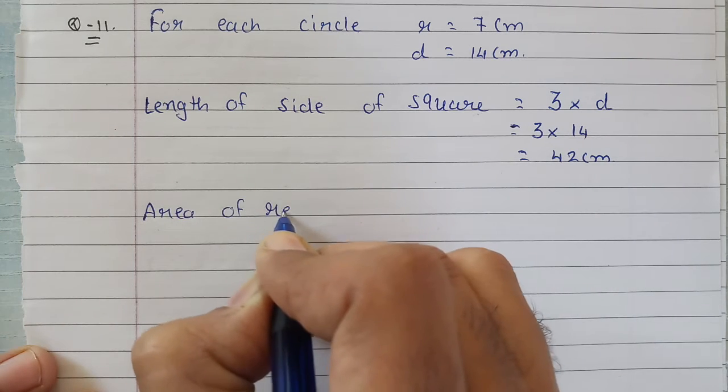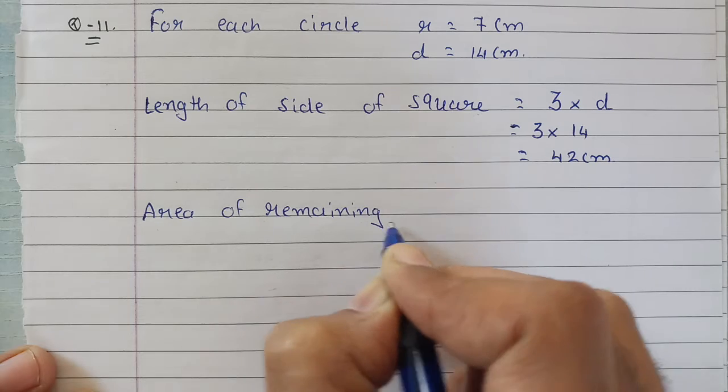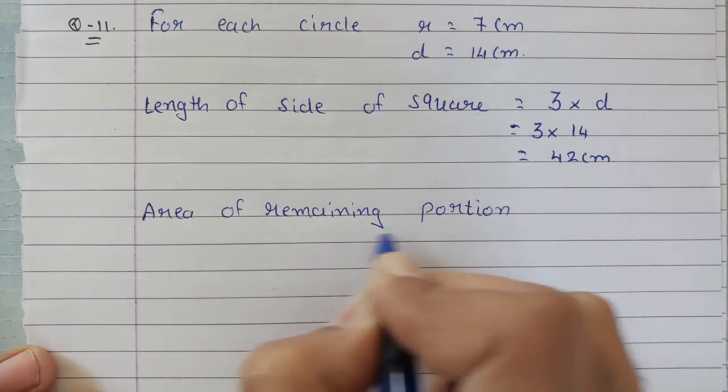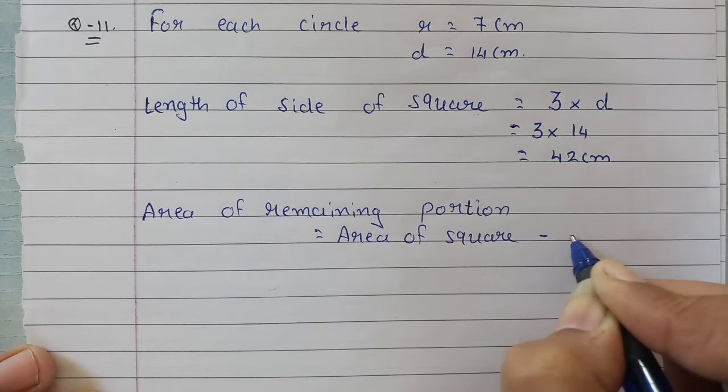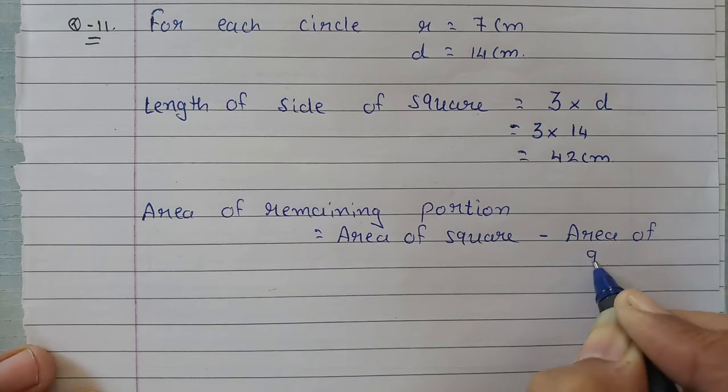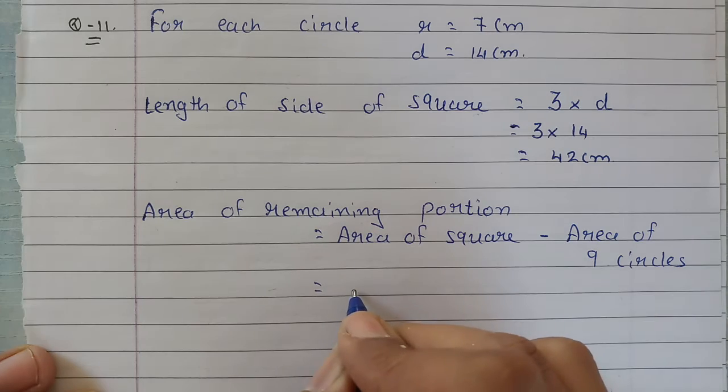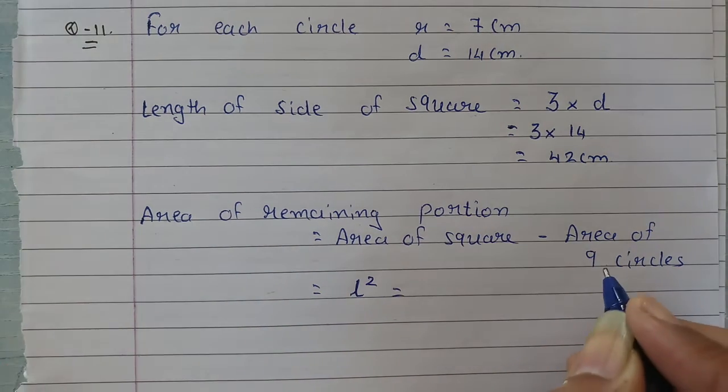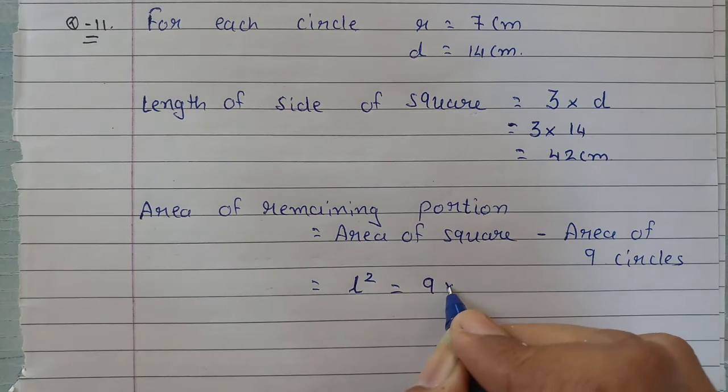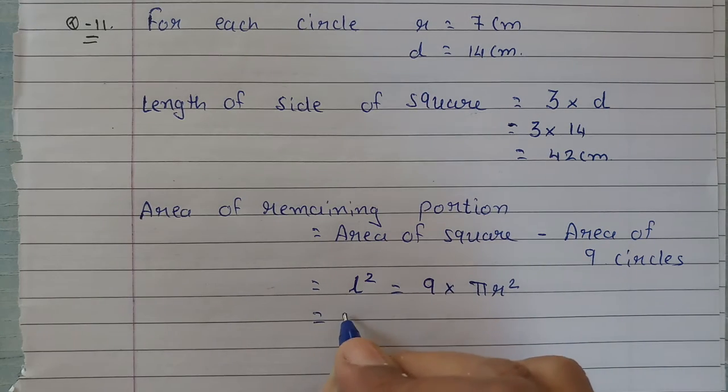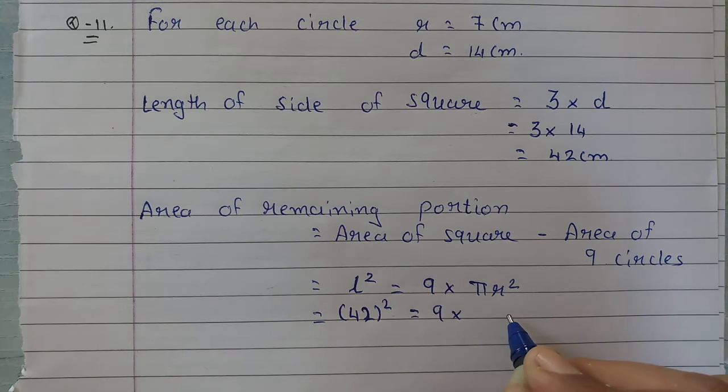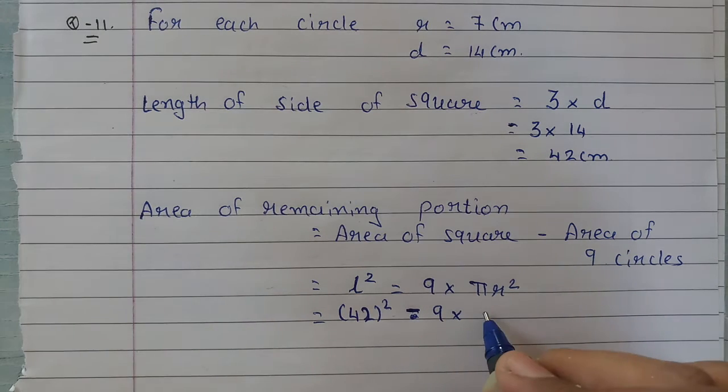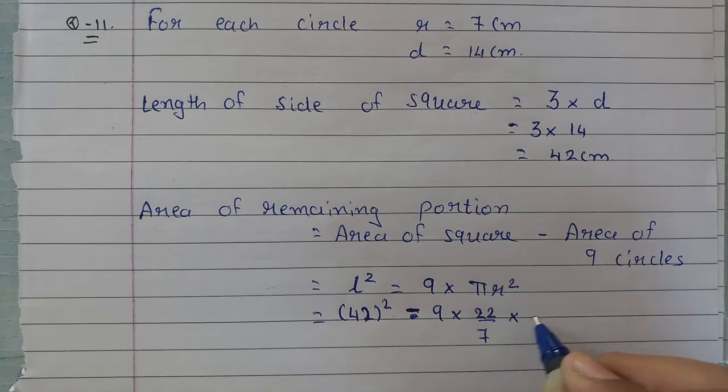Now what we need is area of remaining portion. That is equal to area of square minus area of nine circles. Square's area means length squared, and area of nine circles means 9 into π r squared. Length is 42, so we have square of 42 minus 9 into 22 by 7. Radius is 7, so 7 squared.